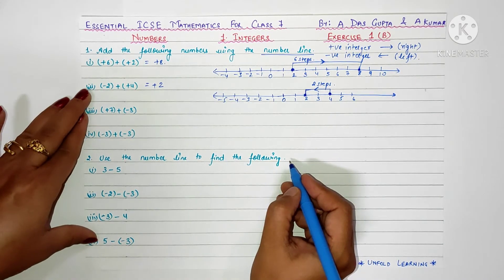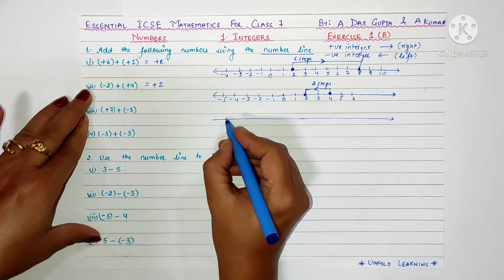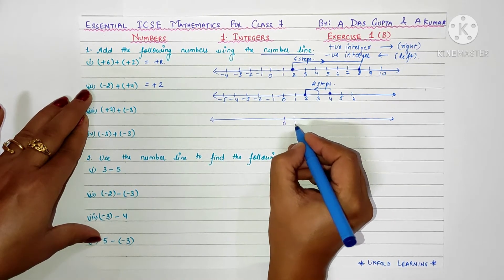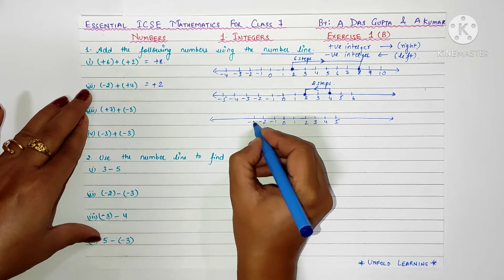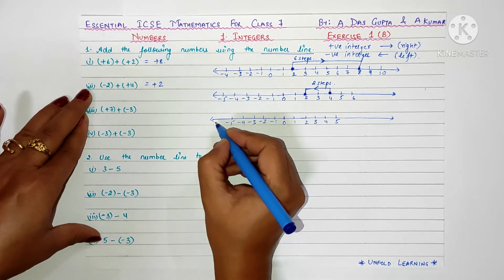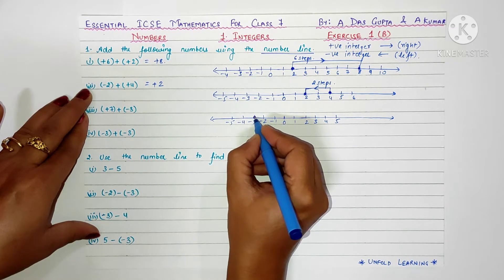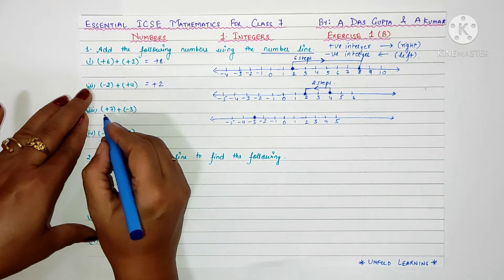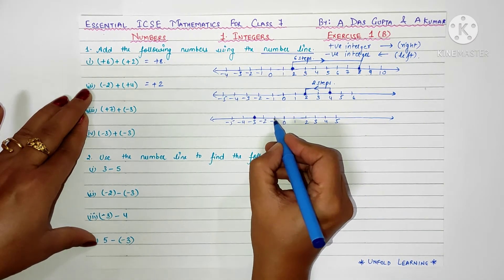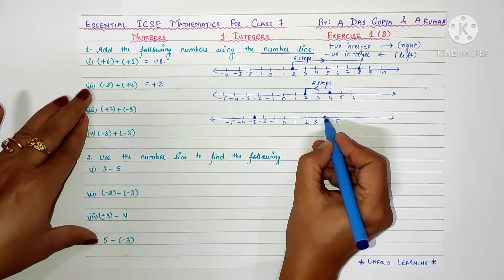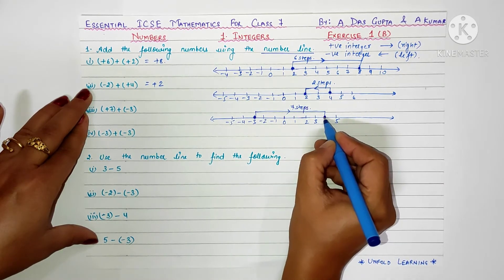Next is plus seven plus minus three. I will draw a number line and mark zero, one, two, three, four, five, minus one, minus two, minus three, minus four, minus five. We start from minus three, then add positive seven — positive integer so move right — seven steps: one, two, three, four, five, six, seven. We moved seven steps to the right, so your answer is plus four.